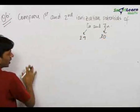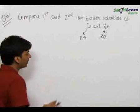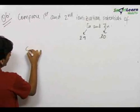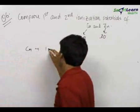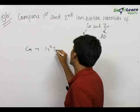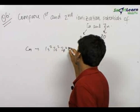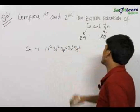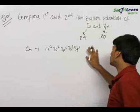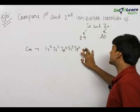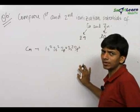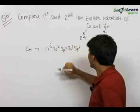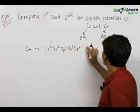You must remember the atomic numbers of elements at least up to 30. For copper, let us first write the electronic configuration. This becomes equal to 1s2, 2s2, 2p6, 3s2, 3p6. Before the 3d orbitals are filled, we fill up the 4s orbitals. How many have we already filled? 2, 4, 10, 12, and 18.